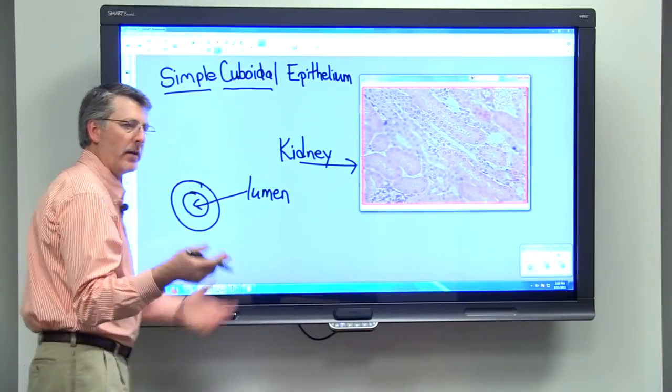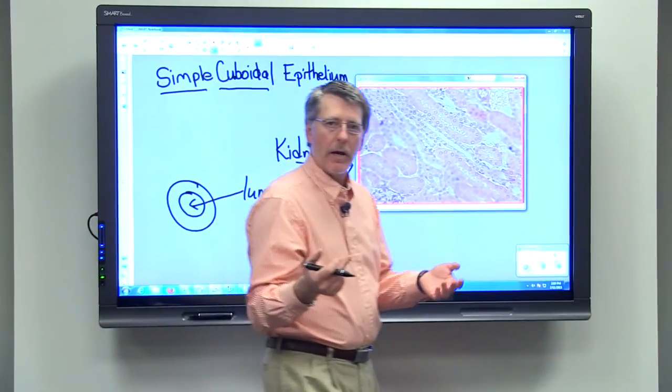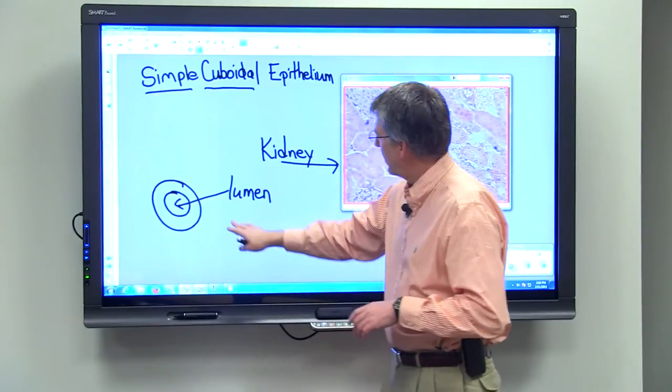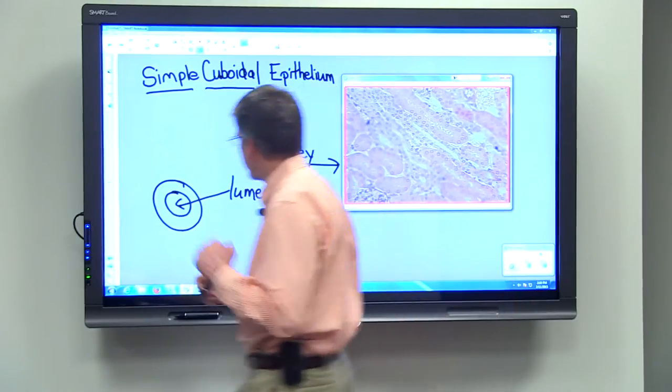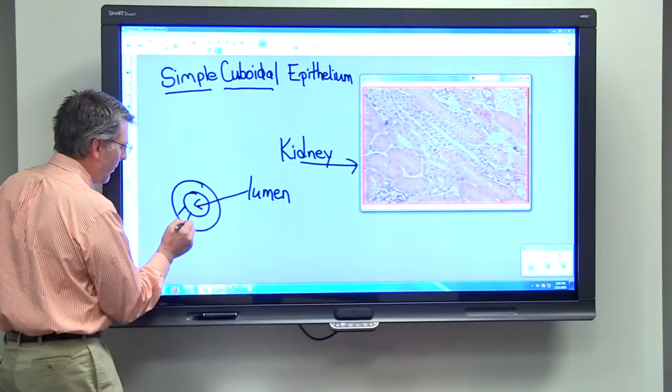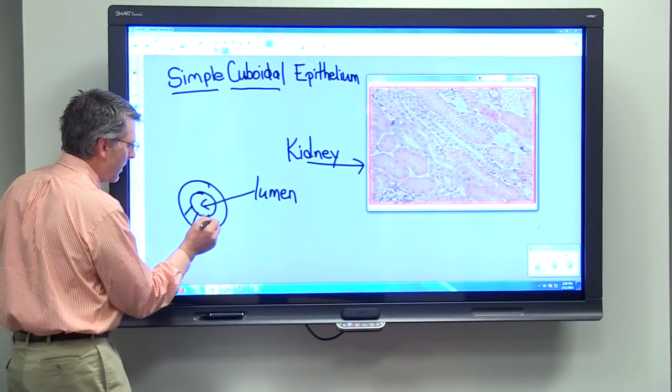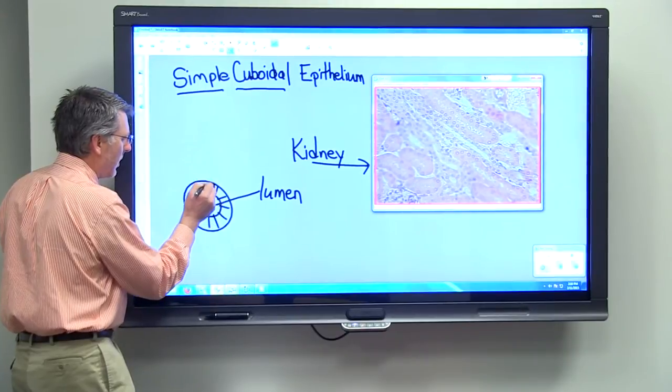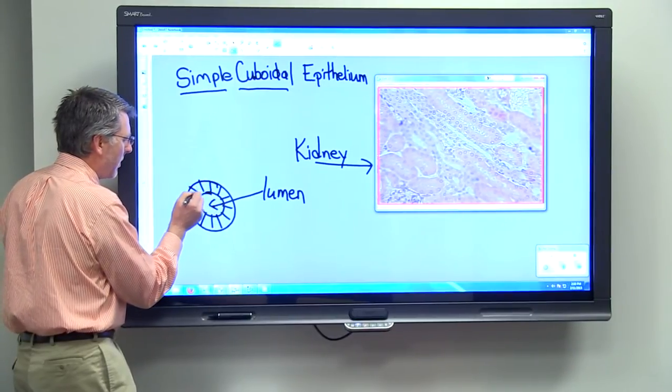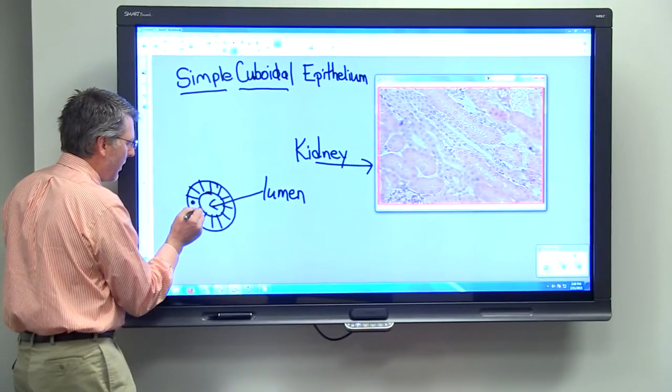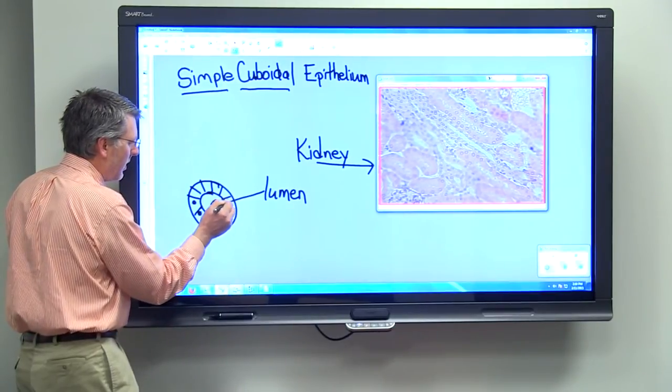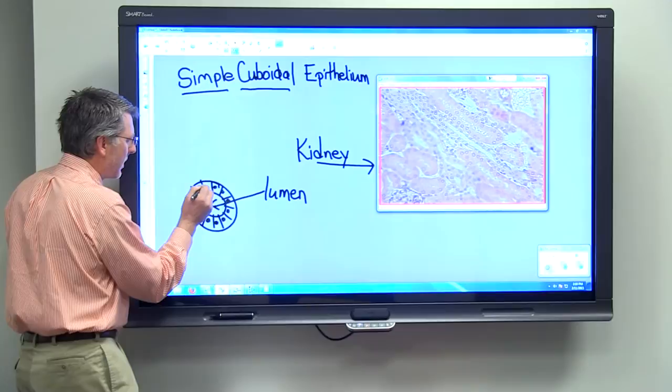There are pipes running through this building that are water pipes, and water runs through the lumen of those pipes. And so this would be one of the little tubules within the kidney. And if we look at a cross section, it would be circular. And it's simple cuboidal epithelium that lines that particular tube.